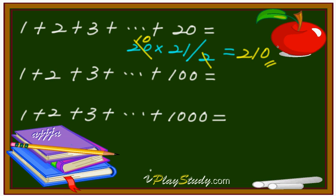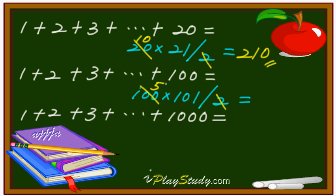What about one through one hundred? The last number is one hundred, the next number is one hundred one, then divide by two. One hundred divided by two is fifty, and fifty times one hundred one is five thousand fifty.